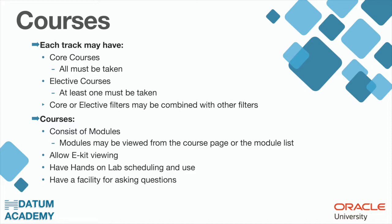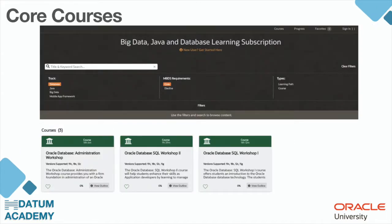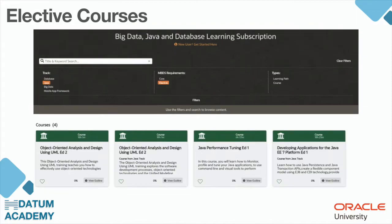In your platform you can combine filters in order to find the courses you are looking for. For example, here we've combined 'core' and 'database' as filters, so the platform only shows core courses in database. We have three of them, and it's the same thing for elective courses.